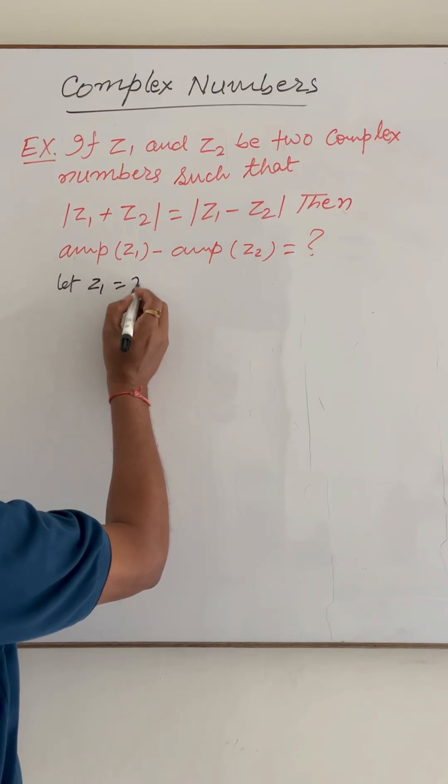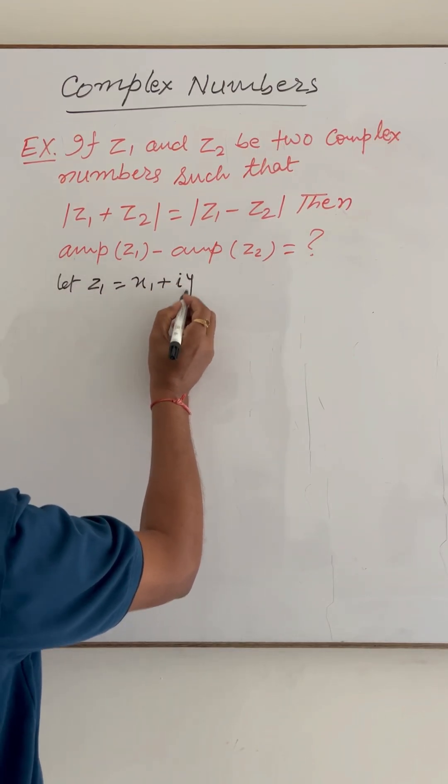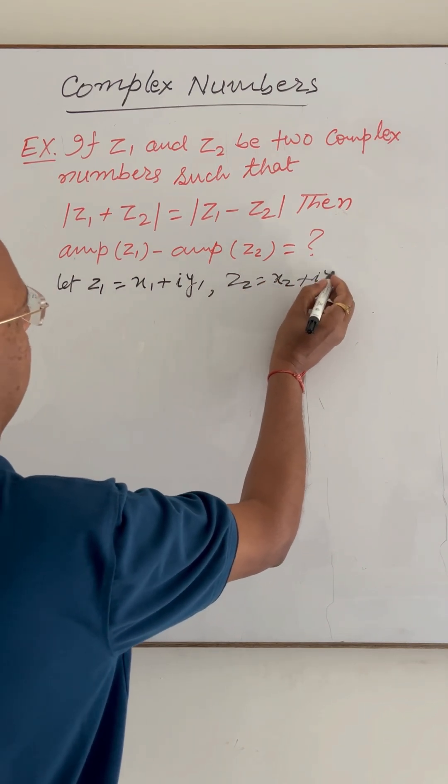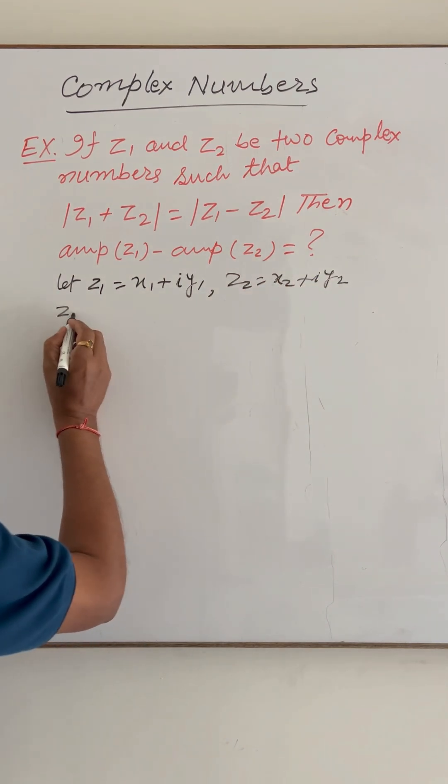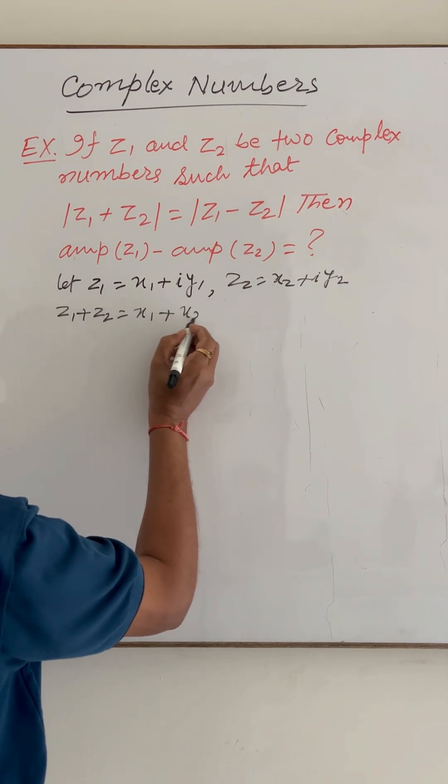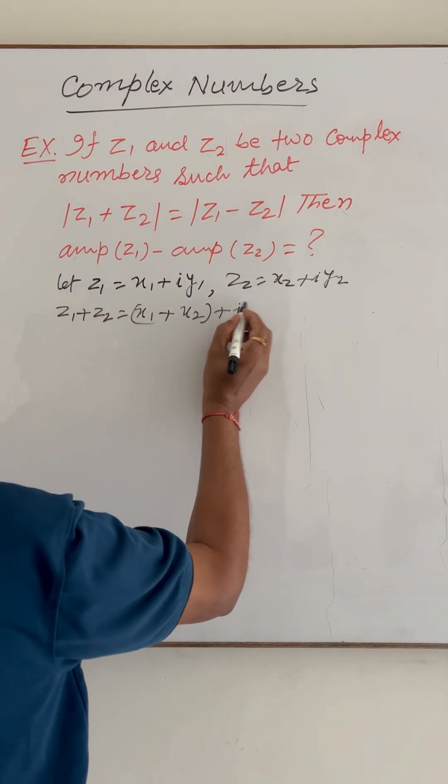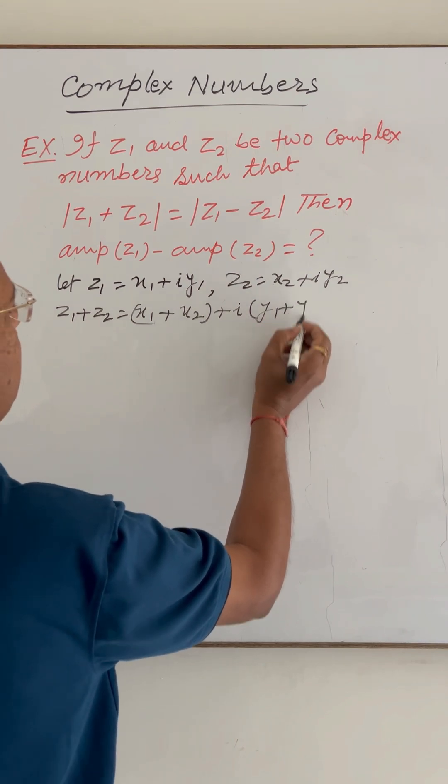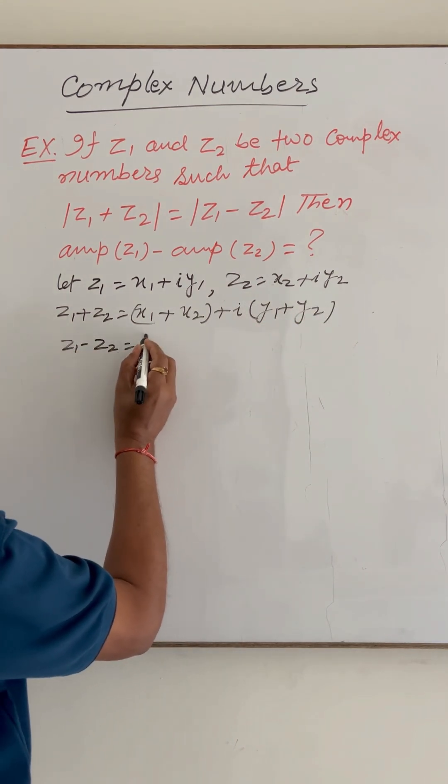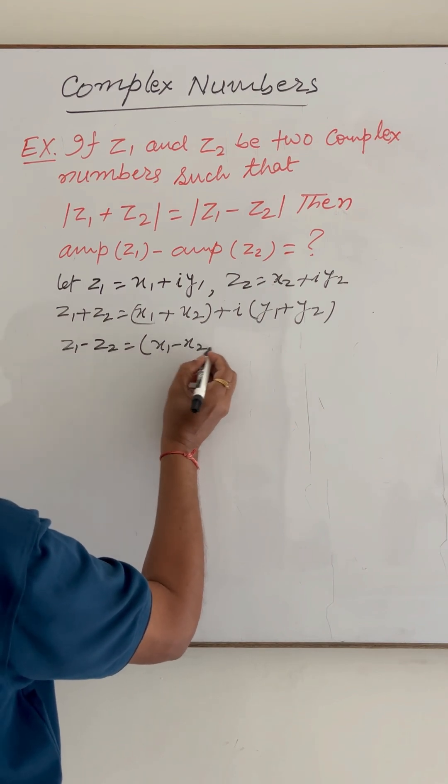Suppose that complex number z1 is x1 plus i*y1 and z2 is x2 plus i*y2. So z1 plus z2 equals (x1 + x2) plus i*(y1 + y2), and z1 minus z2 is (x1 - x2) plus i*(y1 - y2).